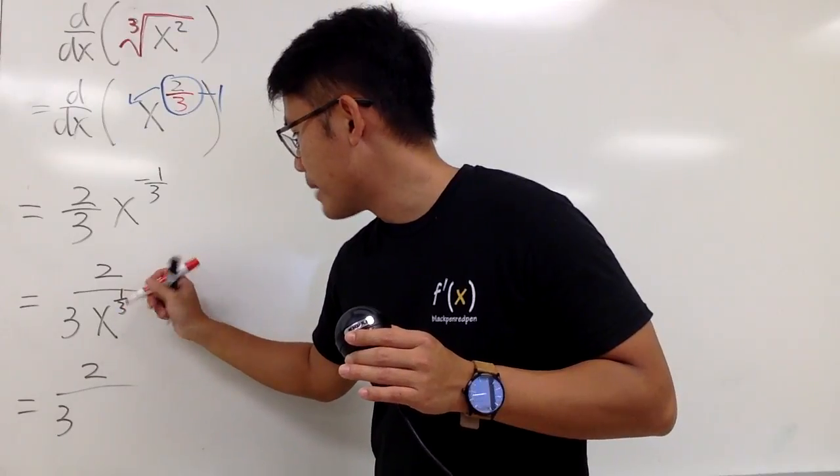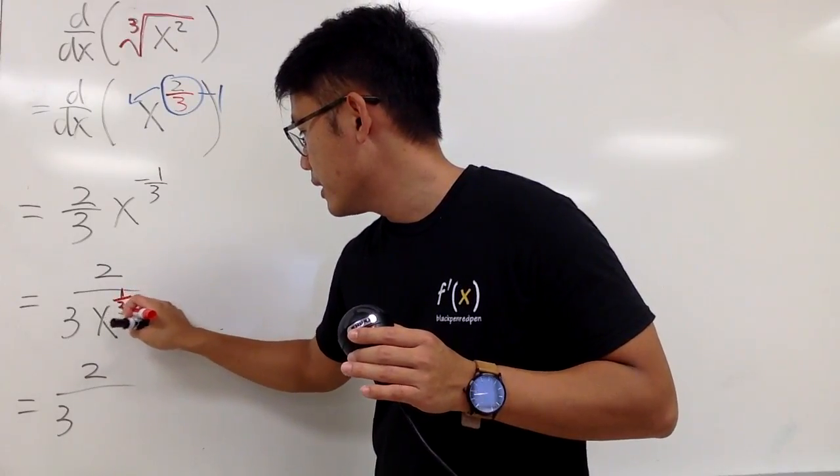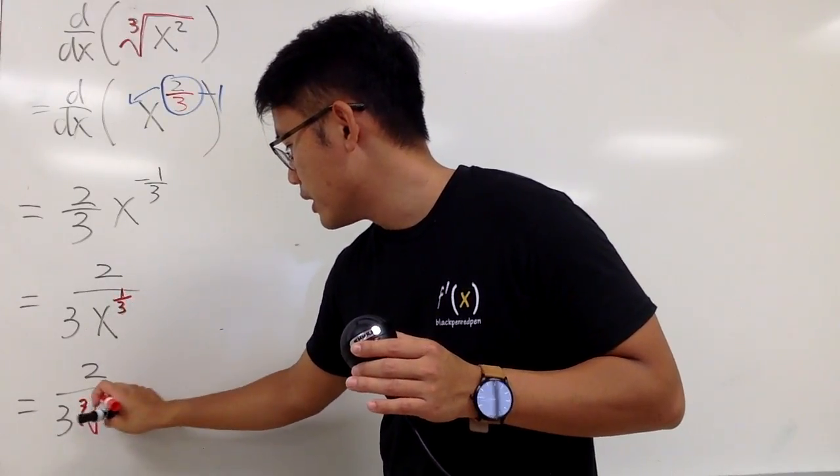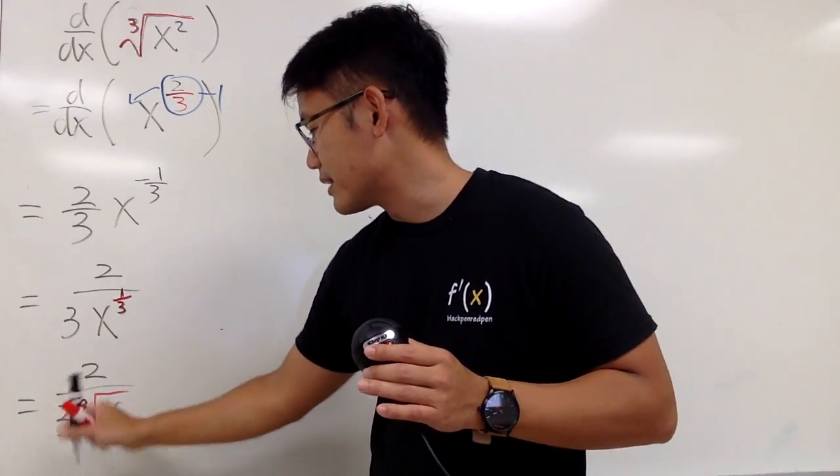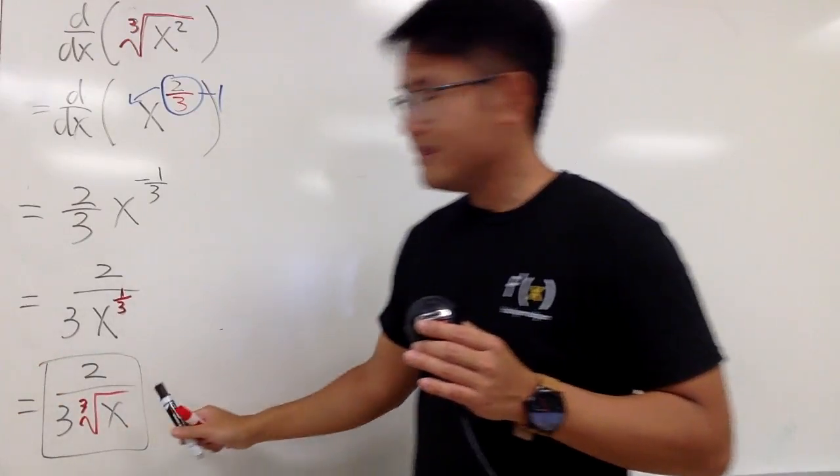So you get 2 over 3, and the 1/3 power, it's the same as the cube root. And notice this is only for the x, so we have the cube root of x right here only, and then we have 2/3 like this. And that's it.